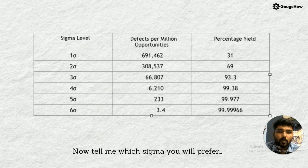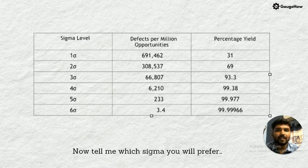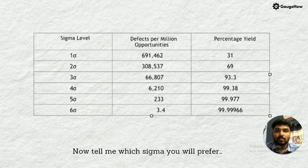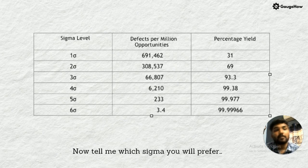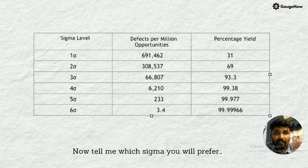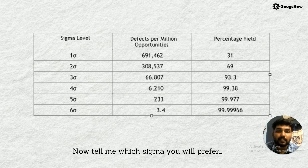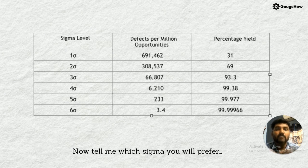Here is a schematic view of each type of sigma processes showing sigma level, defects per million opportunities percentage. First sigma level, they have achieved 691,462 defects per million opportunities and the percentage of yield is 31%. They have reduced the variations and increased quality. In two sigma, 308,537 defects per million opportunities and percentage yield 69%. In three sigma, they have achieved 66,807 defects per million opportunities, percentage yield 93.3%. After step-by-step improvements, they achieved Six Sigma with only 3.4 defects per million opportunities and percentage yield 99.9997%. Which sigma you will prefer? Obviously Six Sigma.